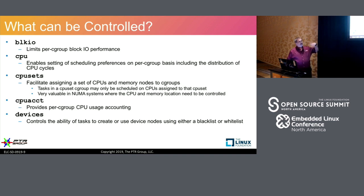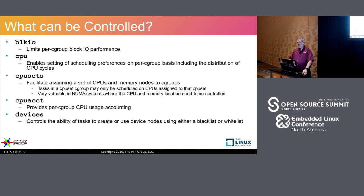The next controller is CPU, which controls what percentage of CPU time a particular application gets. Each application has at most 1,024 units of CPU time, and we can adjust those units to limit CPU time for a given process.